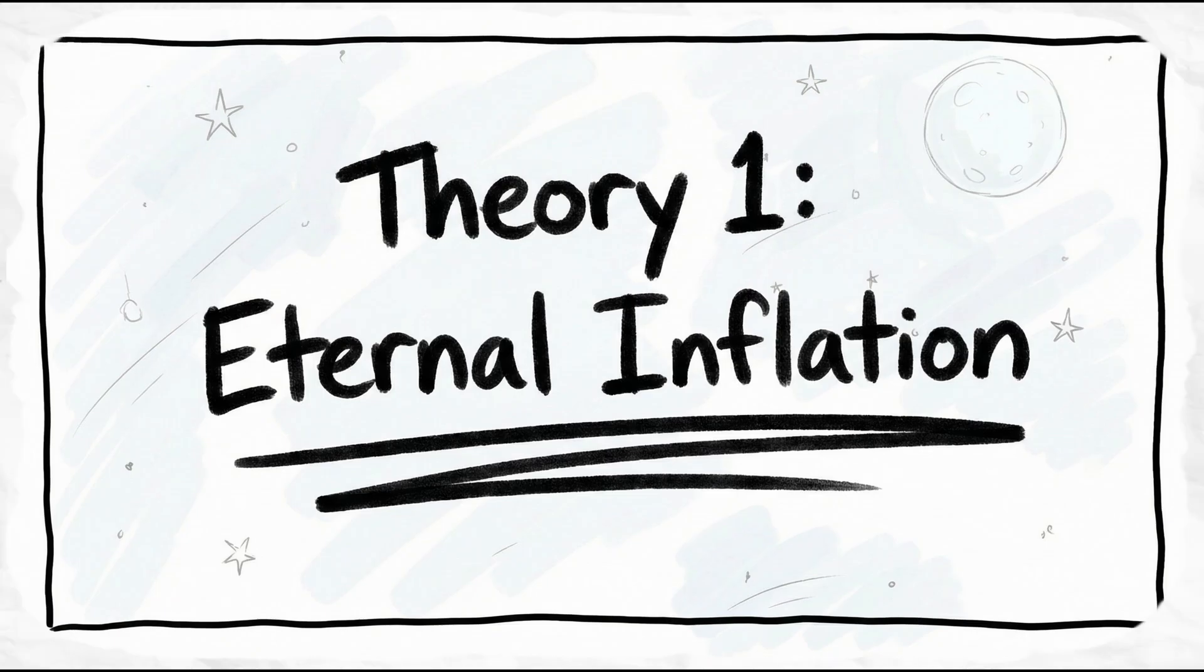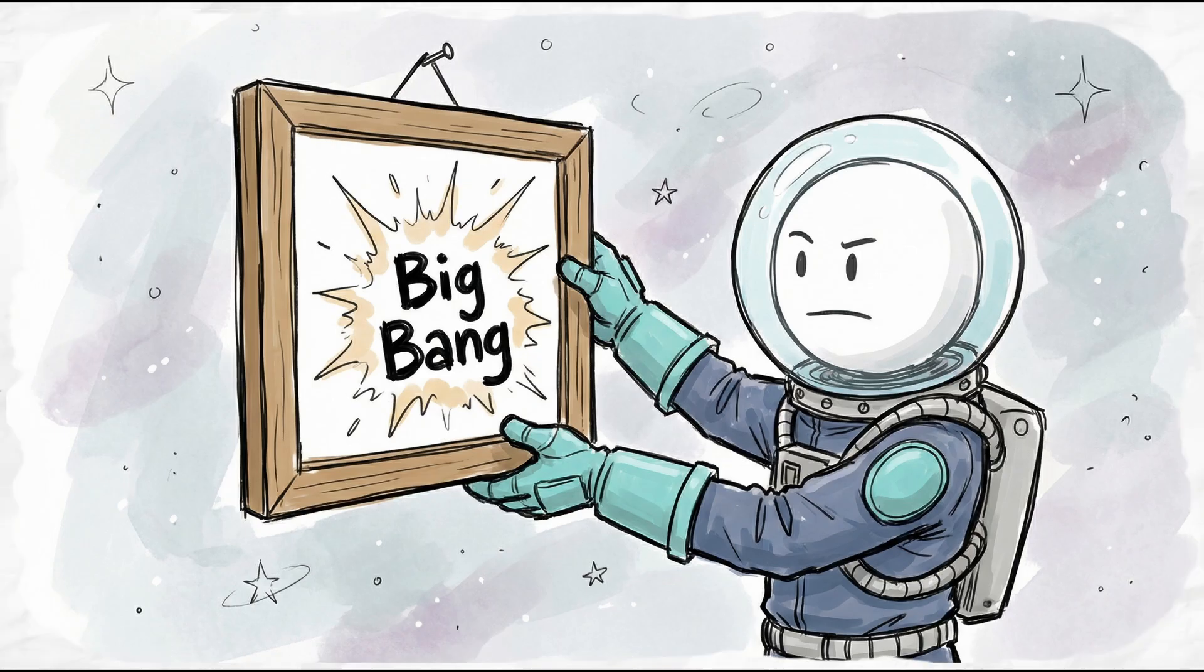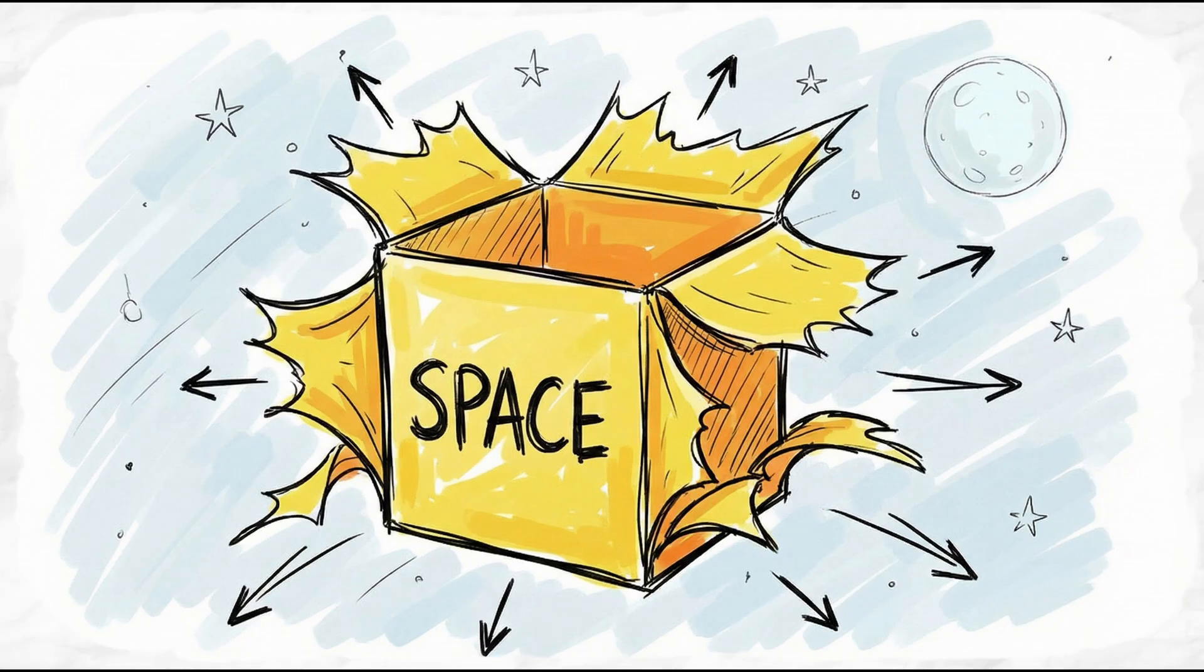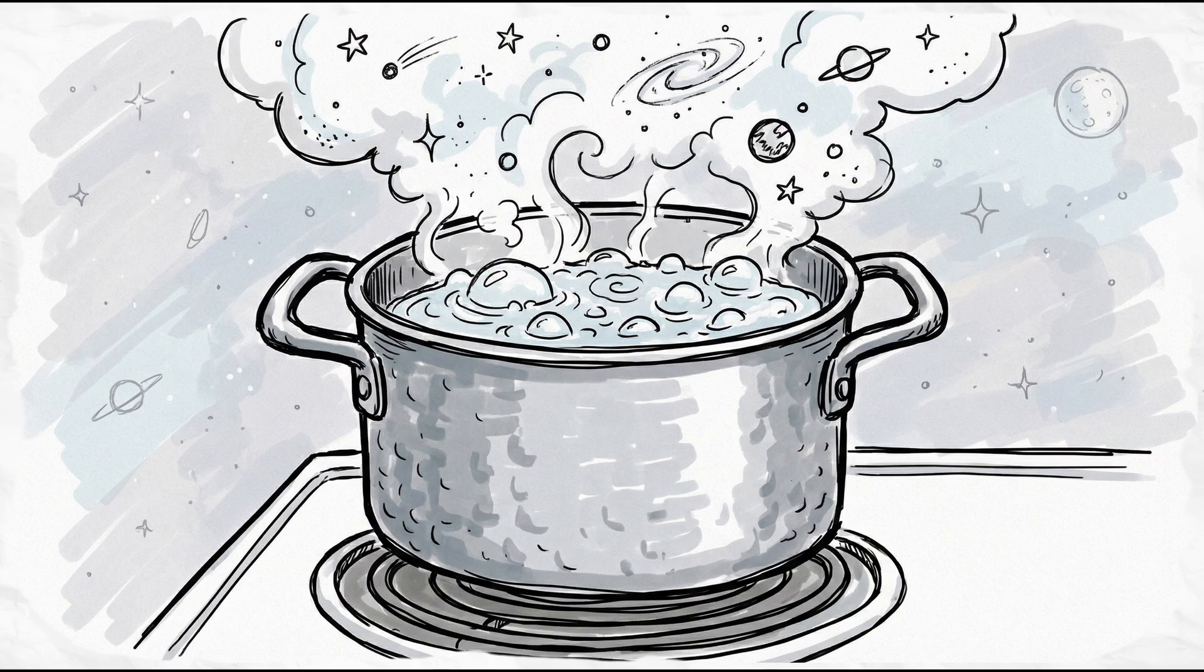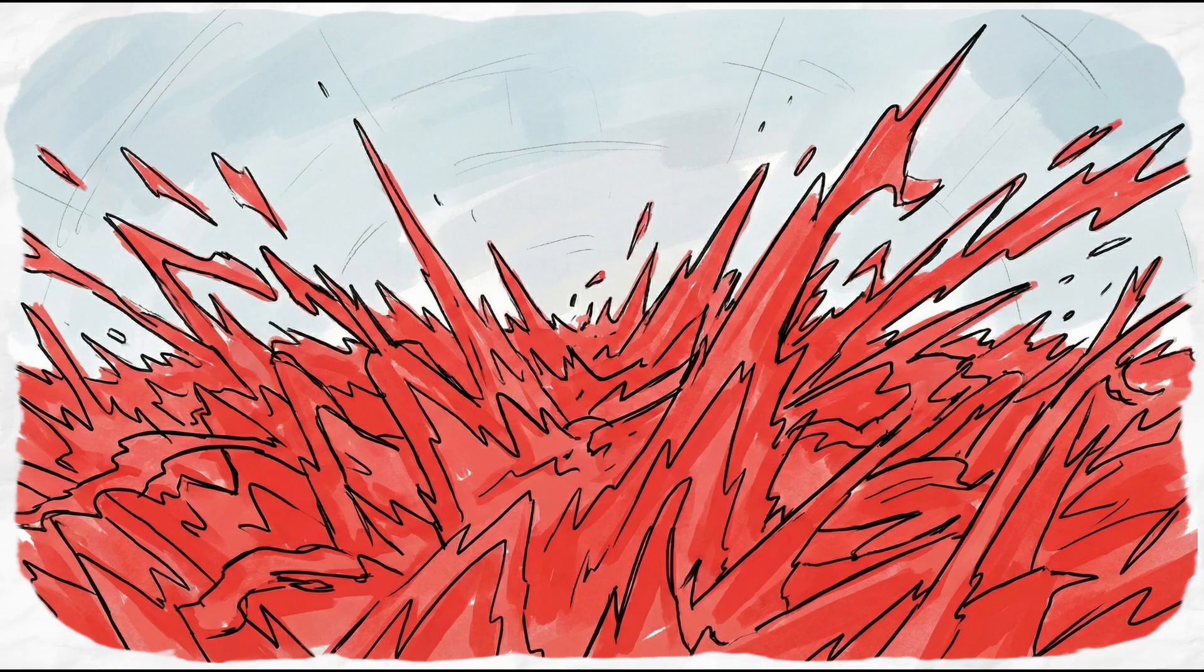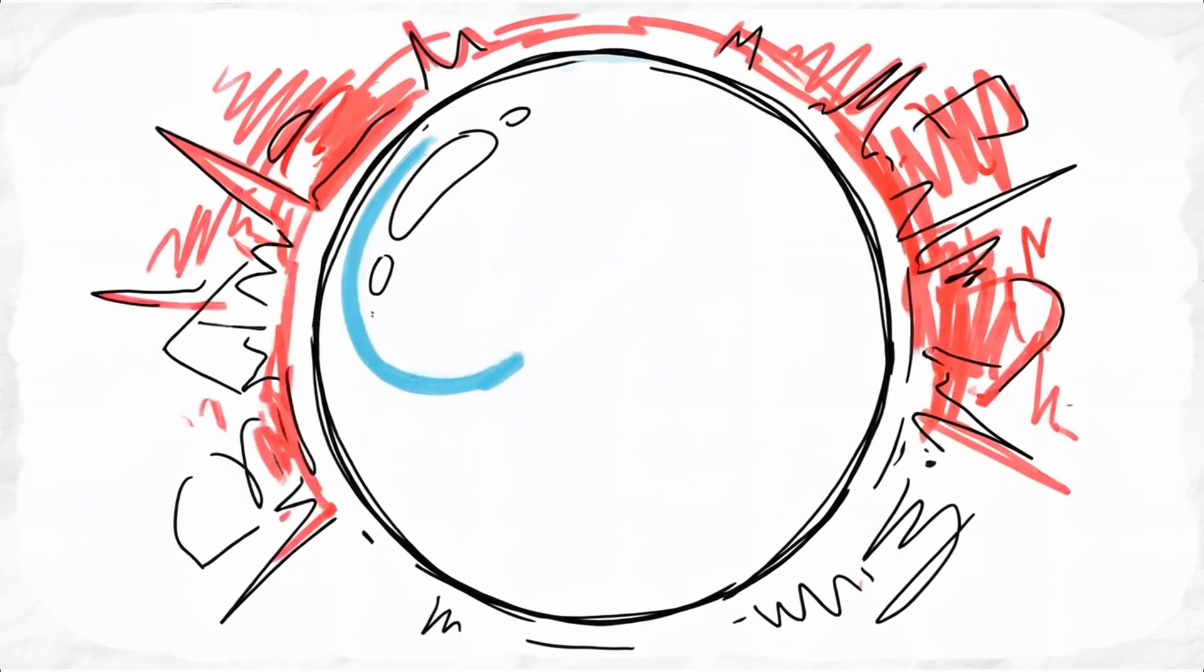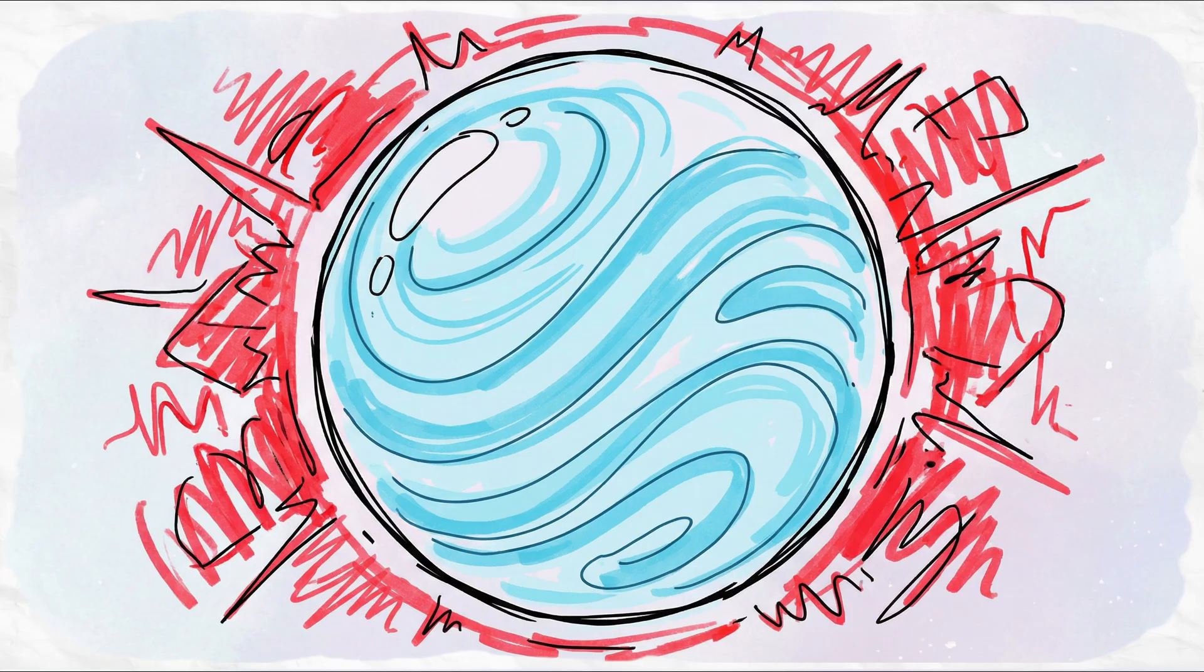Theory 1, eternal inflation. We need to fix how you picture the Big Bang. It wasn't an explosion in space. It was an explosion of space. Think of the universe as a pot of boiling water. The water is a high-energy field constantly expanding. In this pot, bubbles form.